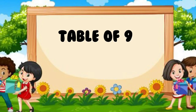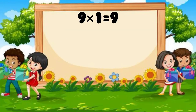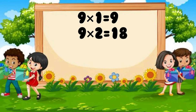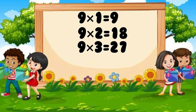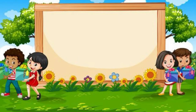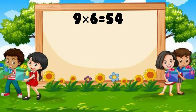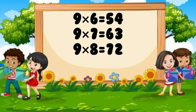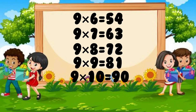Table of 9. 9 1s are 9. 9 2s are 18. 9 3s are 27. 9 4s are 36. 9 5s are 45. 9 6s are 54. 9 7s are 63. 9 8s are 72. 9 9s are 81. 9 10s are 90.